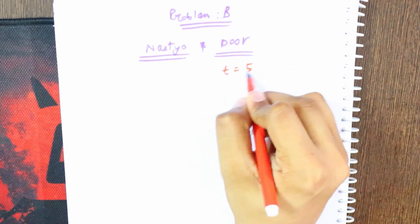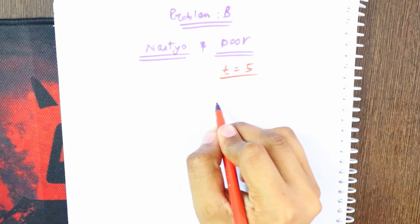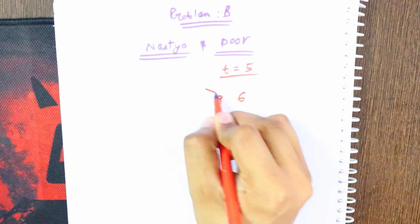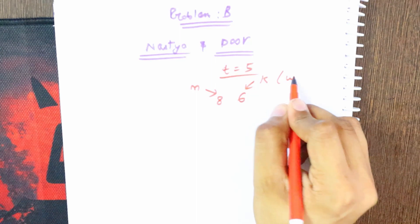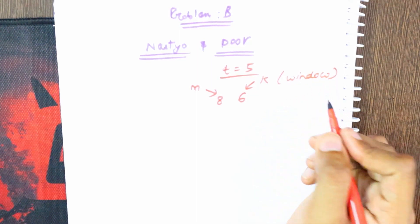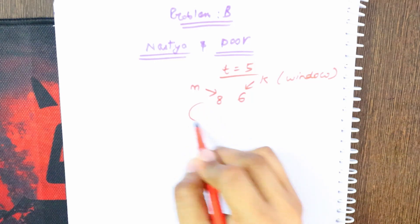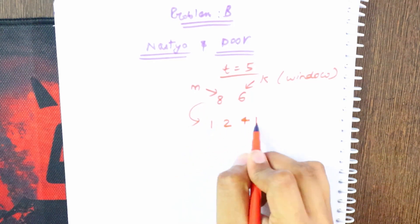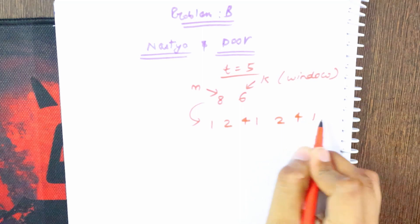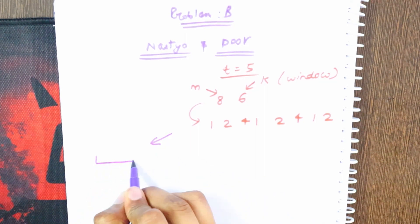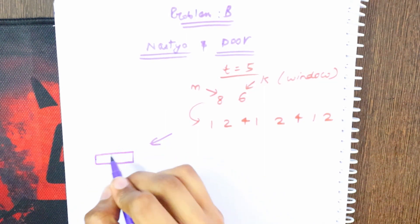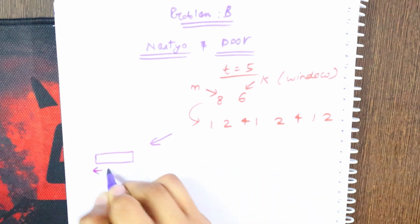First of all, we will be having T test cases. Then we will be having N and K. N is the number of elements in the array and K is the window. I will explain what is the window and what we need to find out. Then after that we will be having N elements.